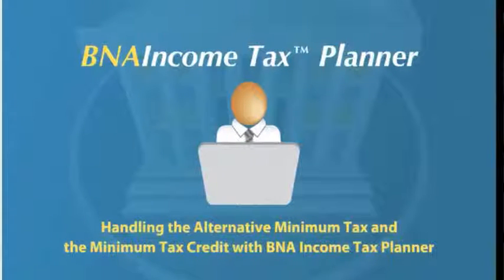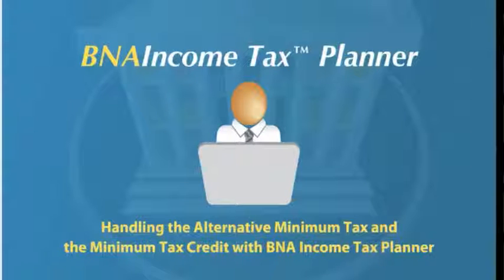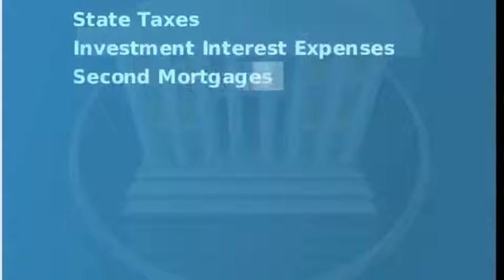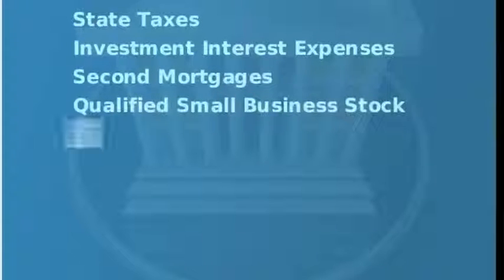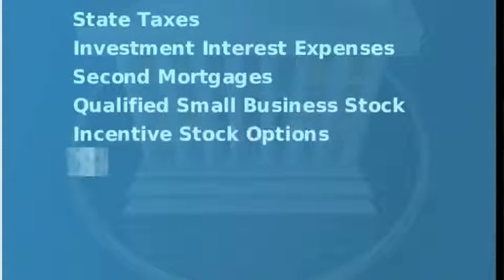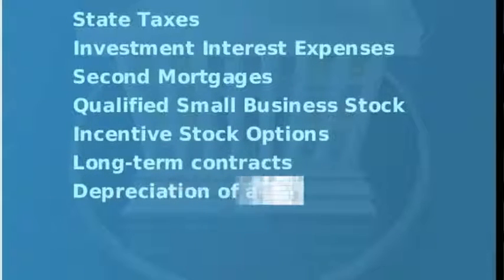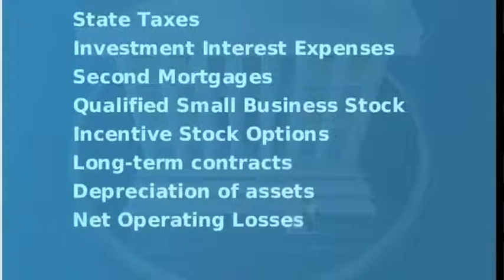B&A Income Tax Planner is your ideal solution for easily computing the alternative minimum tax and minimum tax credit for any taxpayer. Taxpayers may face paying the alternative minimum tax for a variety of reasons, generally triggered by scenarios that involve their state taxes, especially in high tax states, investment interest expenses, second mortgages, qualified small business stock, incentive stock options, long-term contracts, depreciation of assets, net operating losses, and more.